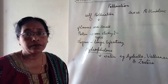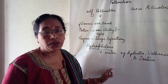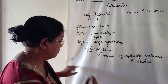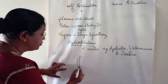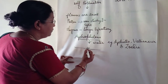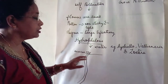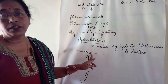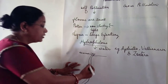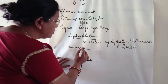In Vallisneria, the male flower releases its pollen on the surface of the water. The female flower develops a long coiled stalk to reach the surface of the water. The pollen grains reach along with the water current, and pollination and fertilization take place. As fertilization takes place, the stalk pulls the flower back down.